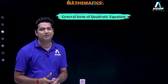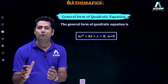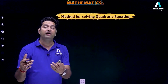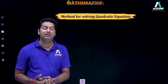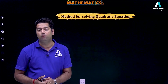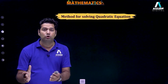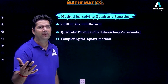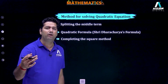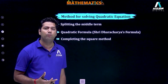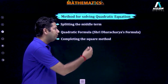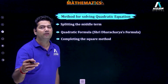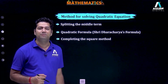The general form is ax square plus bx plus c is equal to 0, where a is not equal to 0. Different methods are used to solve the quadratic equation. The first one is by factorization — factorizing by splitting the middle term. The second one is by quadratic formula, or we can also say by Sridharacharya's formula. And the third one is by completing the square method.